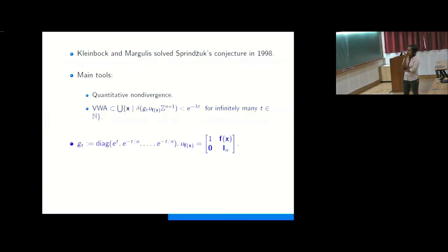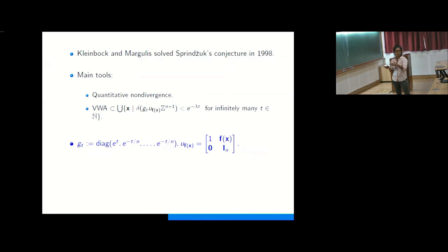By the diagonal action I mean the action on SL(n+1, R) mod SL(n+1, Z): for every point x in R^n, you look at the flow in this homogeneous space.